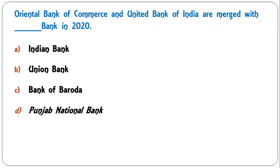Oriental Bank of Commerce and Punjab & Sind Bank merged with which bank in 2020? Options are Indian Bank, Union Bank, Bank of Baroda, or Punjab National Bank. The correct answer is D — Punjab National Bank. These two banks merged with Punjab National Bank in April 2020.